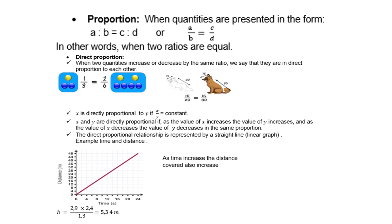So X is directly proportional to Y if X over Y is a constant. X and Y are directly proportional if, as the value of X increases, the value of Y increases. And as the value of X decreases, the value of Y decreases in the same proportion.